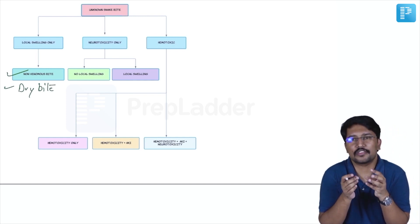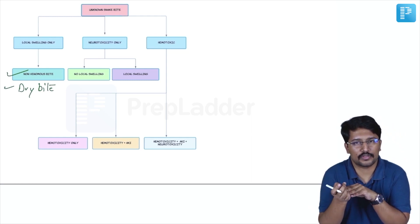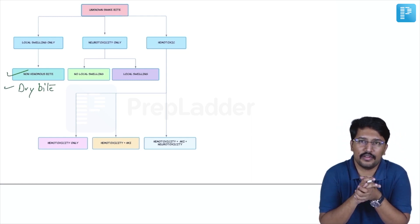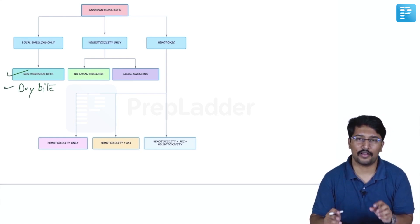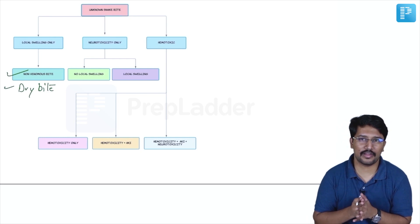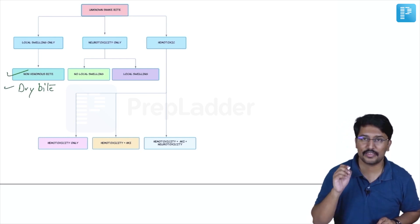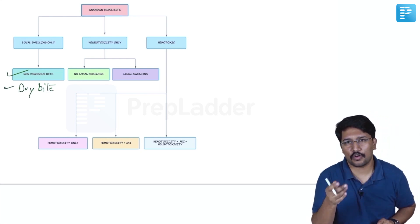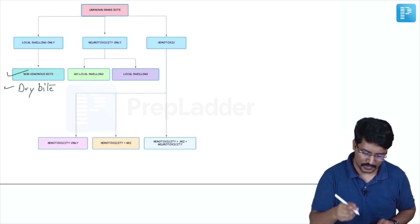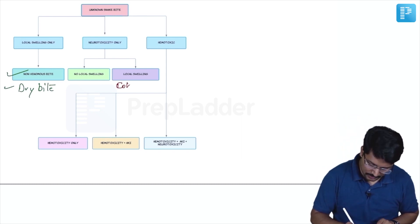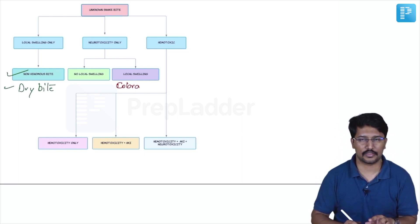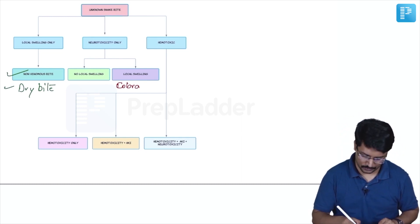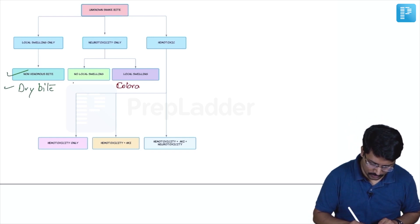When there are systemic manifestations, see whether it is predominantly neurotoxic or hemotoxic. If it is a neurotoxic-only bite, there are two possibilities: either it is Cobra or Krait. What helps you differentiate between Cobra and Krait is whether there is local reaction present or not. If there is local reaction, it is most likely a Cobra bite — Cobra is notorious for causing significant local reaction, with swelling rapidly building up. If there is no local reaction, it points toward Krait.